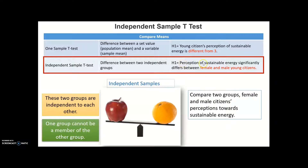H1: perception of sustainable energy significantly differs between female and male young citizens. In this hypothesis, we have two groups — female and male — and they are independent. We have only one dependent variable, which is perception of sustainable energy. In this case, I should use independent sample t-test to test my H1, or alternative hypothesis.